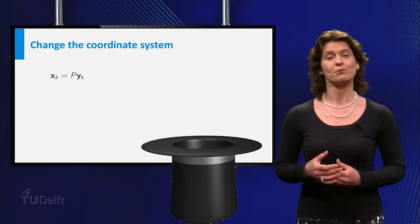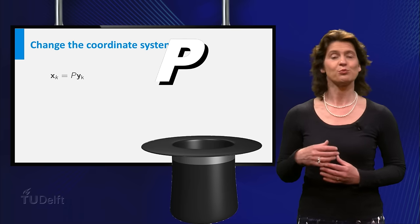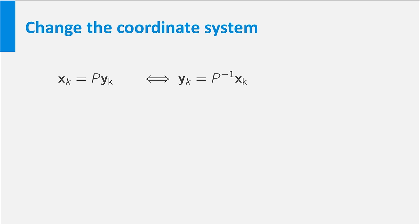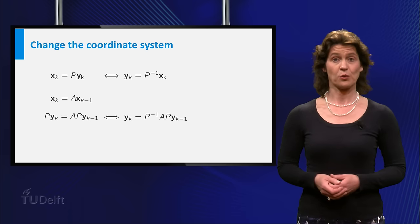Well, pick some invertible matrix P such that xk is equal to P times yk. And so yk is P inverse times xk. Now xk is equal to A times xk minus 1. So substituting P yk for xk, you get P yk is equal to A times P times yk minus 1. Which is equivalent to yk is equal to P inverse AP times yk minus 1. So what, you would probably say.